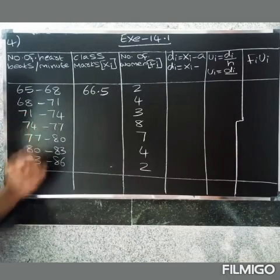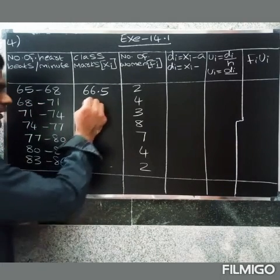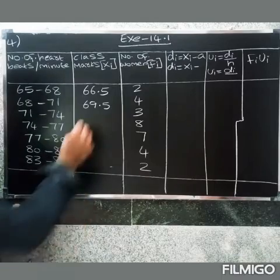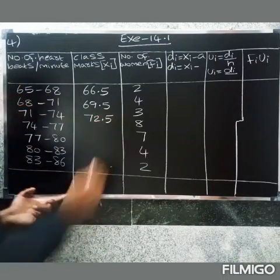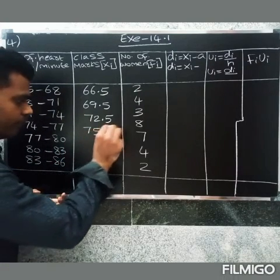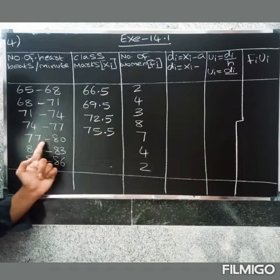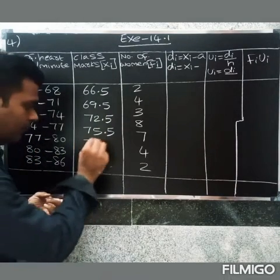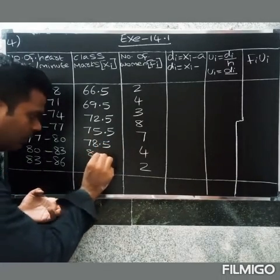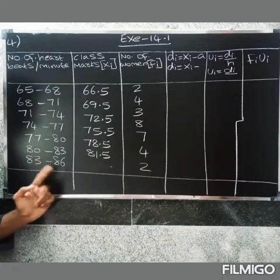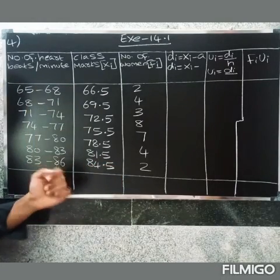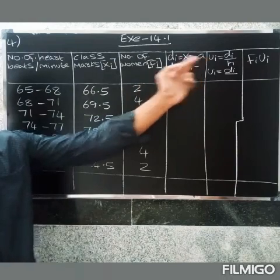Next, for the interval with middle values 69 and 70, the class mark is 69.5. Next, 72 and 73 give middle value 72.5. Next, 75 and 76 give 75.5. Next, 78 and 79 give 78.5. Next, 81 and 82 give 81.5. Next, 84 gives class mark 84.5.